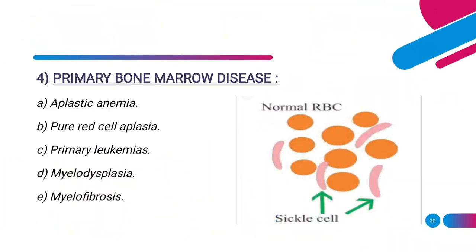Primary bone marrow diseases like aplastic anemia, pure red cell aplasia, primary leukemias, myelodysplasia, and myelofibrosis all result in non-regenerative anemia. Aplastic anemia has been reported in dogs, cats, ruminants, horses, and pigs, with pancytopenia and hypoplastic marrow replaced with fat. Pure red cell aplasia is only seen when the erythroid line is affected, characterized by severe depletion of red cell precursors in bone marrow. Primary leukemias are uncommon to rare in domestic species but have been reported in dogs, cats, cattle, goat, sheep, pigs, and horses. Leukemias can develop in myeloid and lymphoid cell lines and are further classified as acute or chronic.